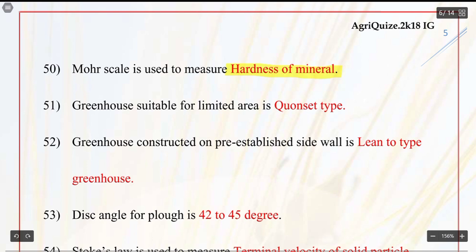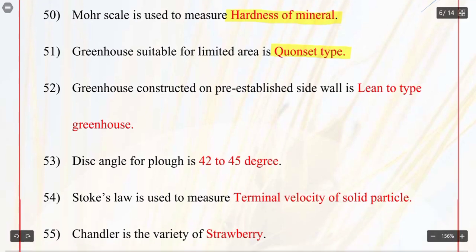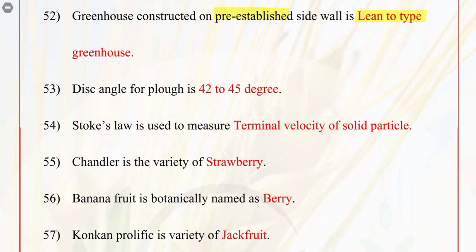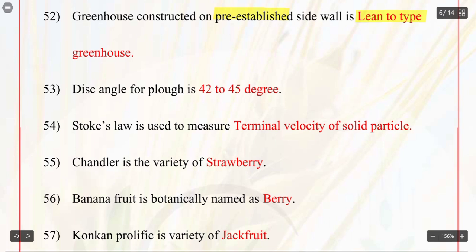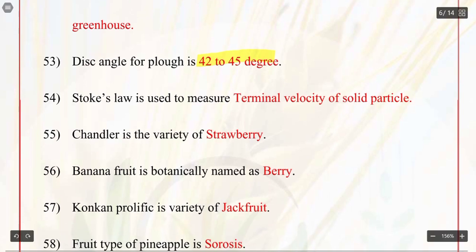Q51. Greenhouse suitable for limited area is Quonset type. Q52. Greenhouse constructed on a pre-established sidewall is lean-to-type greenhouse. Q53. Disc angle for plow is 42 to 45 degrees. Q54. Stokes law is used to measure terminal velocity of solid particle.